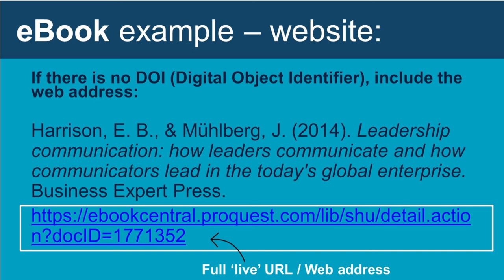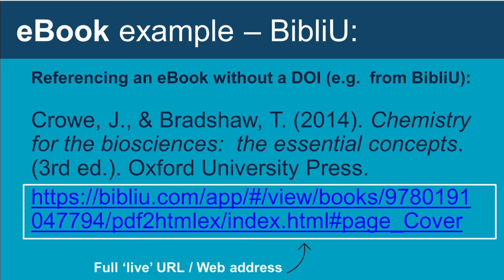Some general advice about titles: capitalize only the first word of a book or article title in your reference, and capitalize any proper nouns, initials, and acronyms. Separate a subtitle with a colon and a space. Another ebook referencing example shows a title from Biblio collection — an e-textbook platform with over 90 core texts available through Library Search. This example includes two authors' family names and initials, a publication date, the title in italics as the third edition published by Oxford University Press. There is no DOI for this collection, so the full URL is included instead.